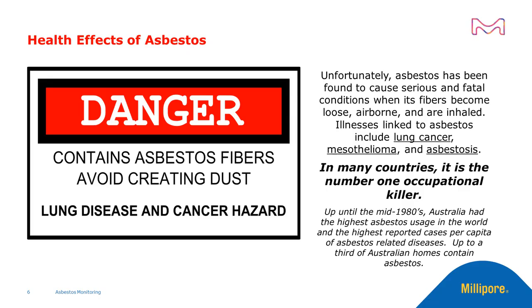Australia had the highest asbestos usage in the world up until the mid-1980s, and the highest reported cases per capita of asbestos-related diseases. Up to a third of Australian homes contain asbestos.